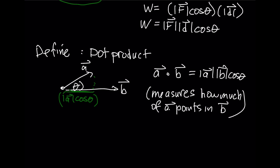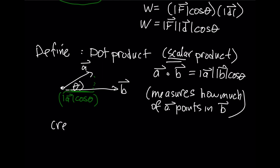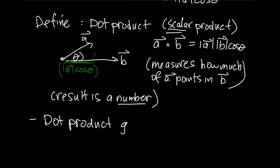Sometimes the dot product is also called the scalar product because it produces a scalar — the result is a number, not a vector. The dot product gives information about the relative orientation between the two vectors.